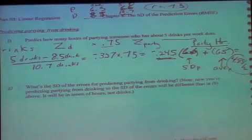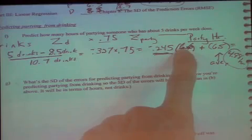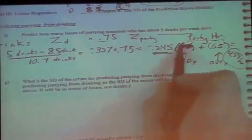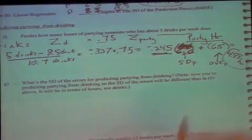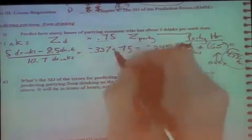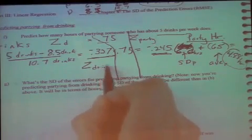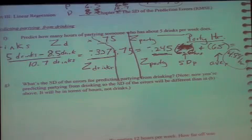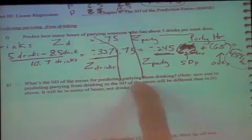So we get 4.88 hours as our estimate. Now, what's the standard deviation of the errors for predicting partying from drinking? This fellow says he drinks five drinks, and I'm estimating he parties about 4.88 — I'll say approximately five hours. But my estimate isn't exact, so we need to attach a margin of error.